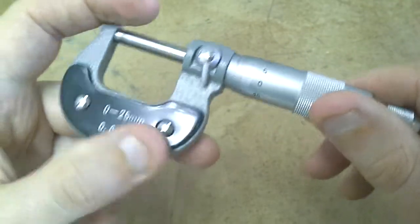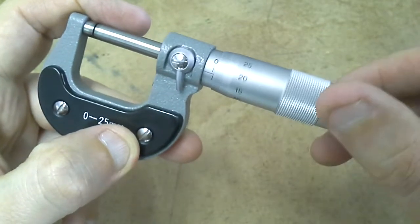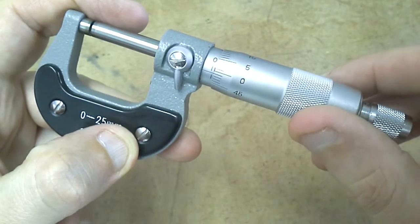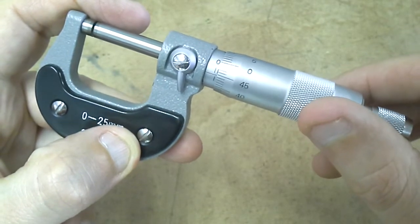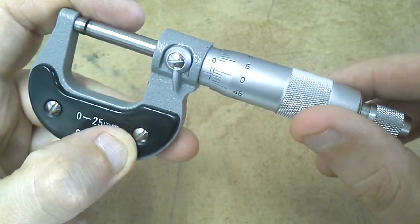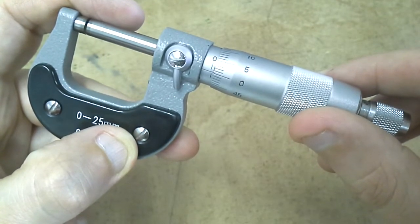Now around the thimble you can see I've got numbers, those numbers actually go all the way up to 49 and then back to 0, so there's 45, 46, 47, 48, 49 and then back to 0.